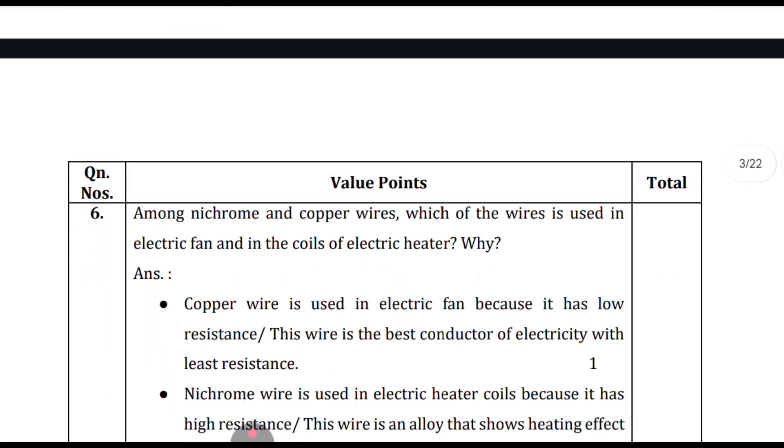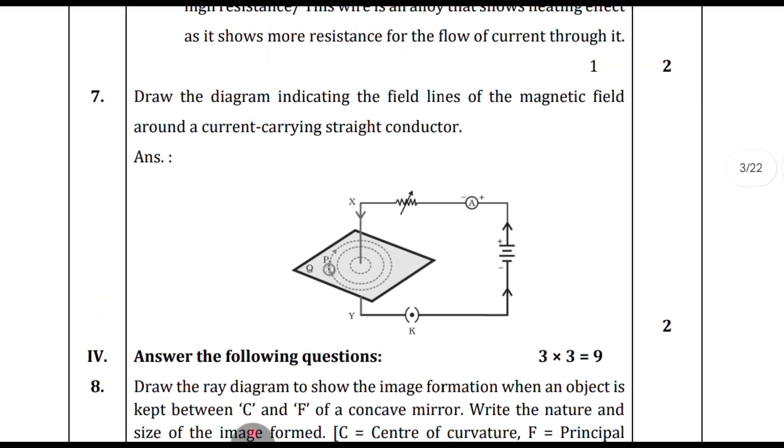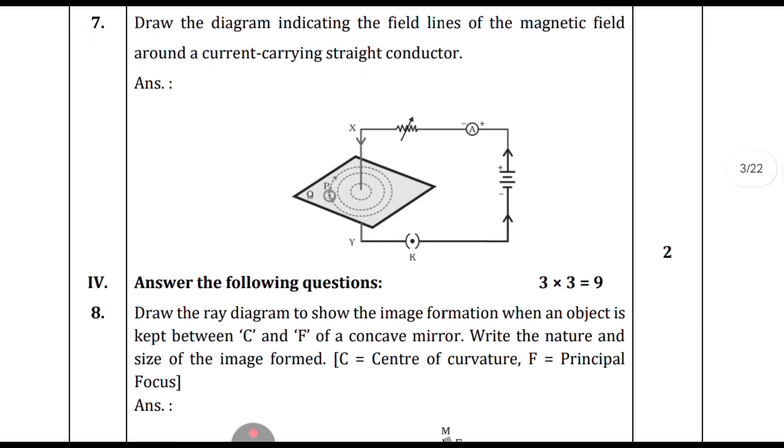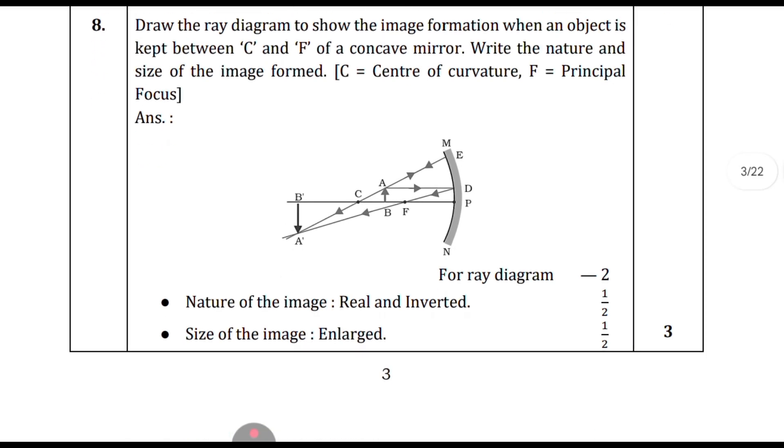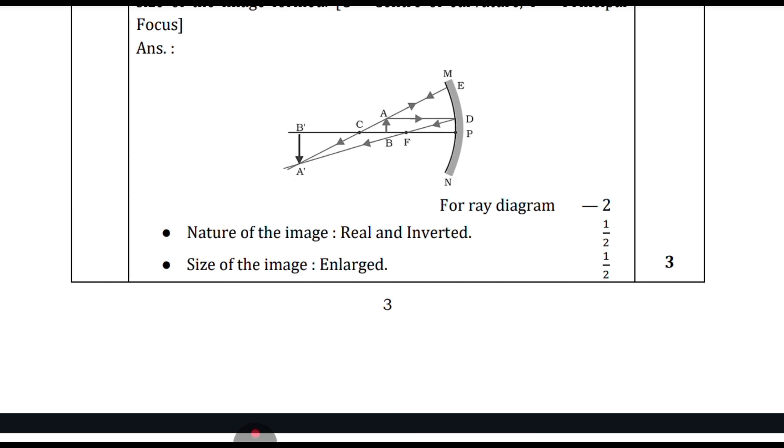This is an applied question, so you should be thorough with your concepts. The seventh question is again important from the activity section. In the textbook there are blue boxes, and they are asking questions from those. The 8th question is very important. All ray diagrams are important, so practice them. For the ray diagram you get two marks, nature of image half mark, size of image half mark. Draw the arrows properly to get full three marks.